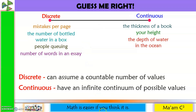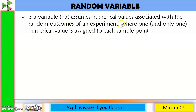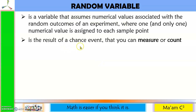Discrete and continuous leads us to the idea of random variable. It is a variable that assumes numerical values associated with the random outcomes of an experiment, where one and only one numerical value is assigned to each sample point. We first heard the word variable in algebra — it is a symbol for a quantity whose value varies. In random variable, it has the same concept, only this time we have to assign values to these outcomes. Another definition: it is the result of a chance event that you can measure or count. We will focus our discussion on data that is either measurable or countable.